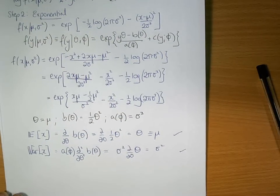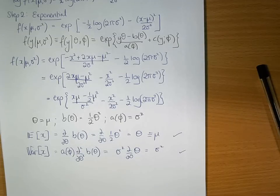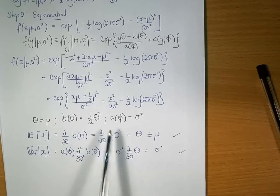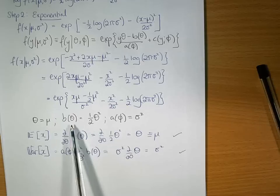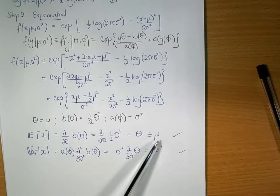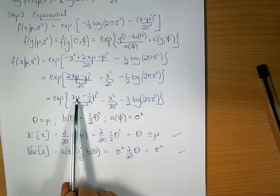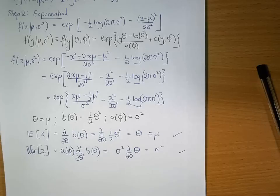Then the only remaining thing to look at is what's the canonical link function. So how is your data linked to the expected value? It's just the identity link function.